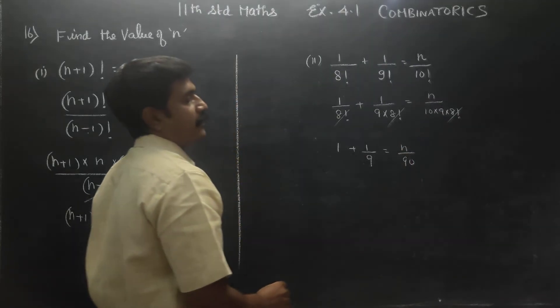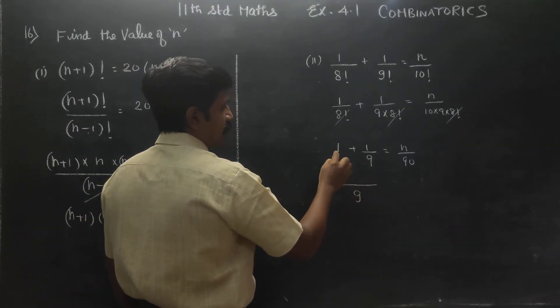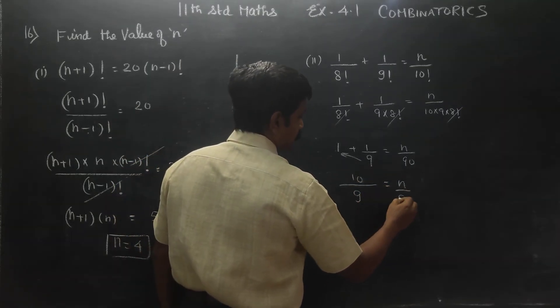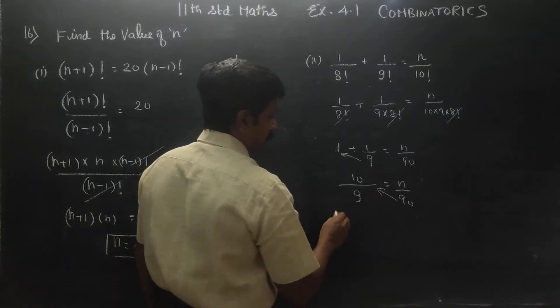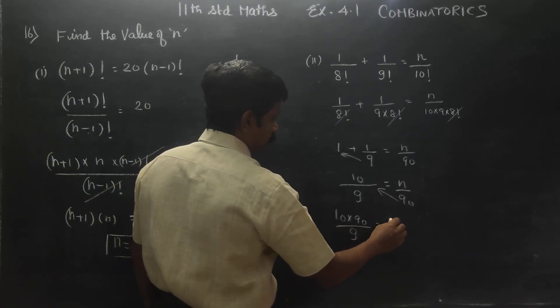1 is equal to sum. You have to take LCM. 9 is equal to n by 90. Cross multiply. 10 into 90 by 9 is equal to n.